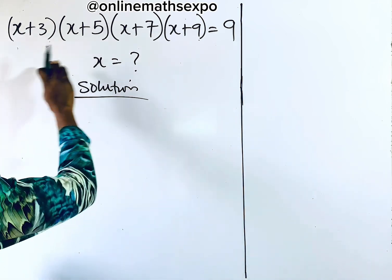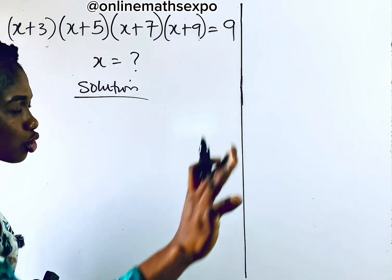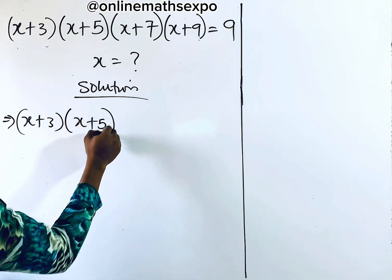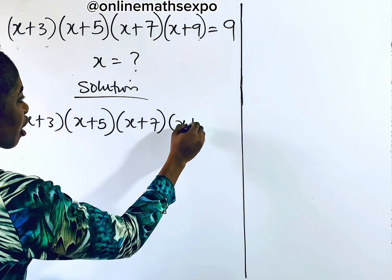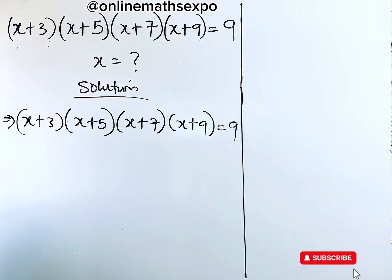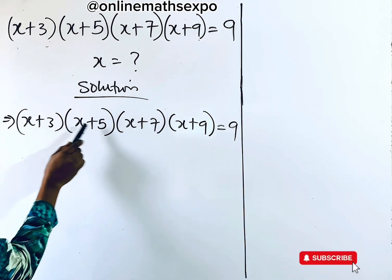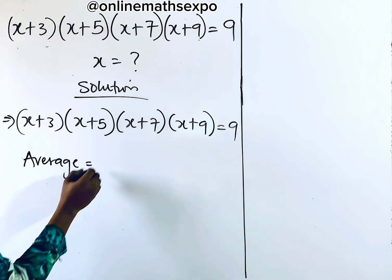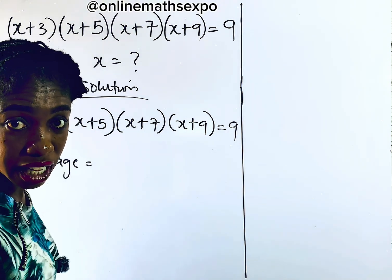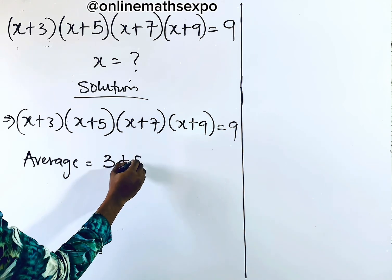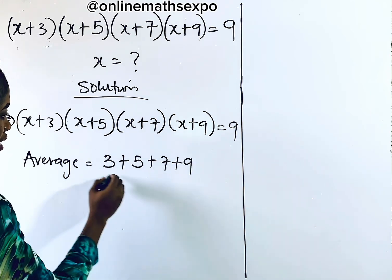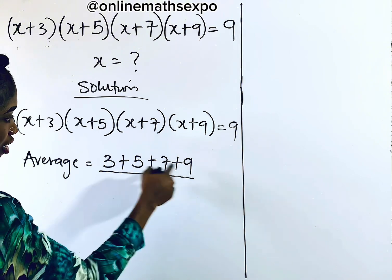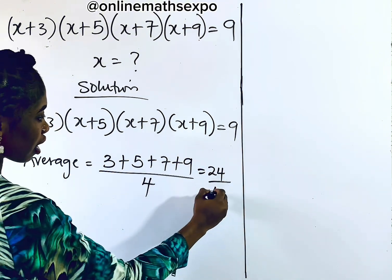So, what you do when you identify such an equation of this form: we have (x+3)(x+5)(x+7)(x+9) = 9. What we do first is to take the average of these constants. Average is: add them and divide by how many they are. So it's going to be 3 + 5 + 7 + 9, divide by 4. If you add this, it gives you 24. 24 divided by 4 gives us 6.